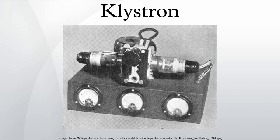Right after WW2, AT&T used 4W klystrons in its brand new network of microwave links that covered the U.S. continent. The network provided long-distance telephone service and also carried television signals for the major TV networks. Western Union Telegraph Company also built point-to-point microwave communication links using intermediate repeater stations at about 40-mile intervals, using 2K25 reflex klystrons in both the transmitters and receivers.